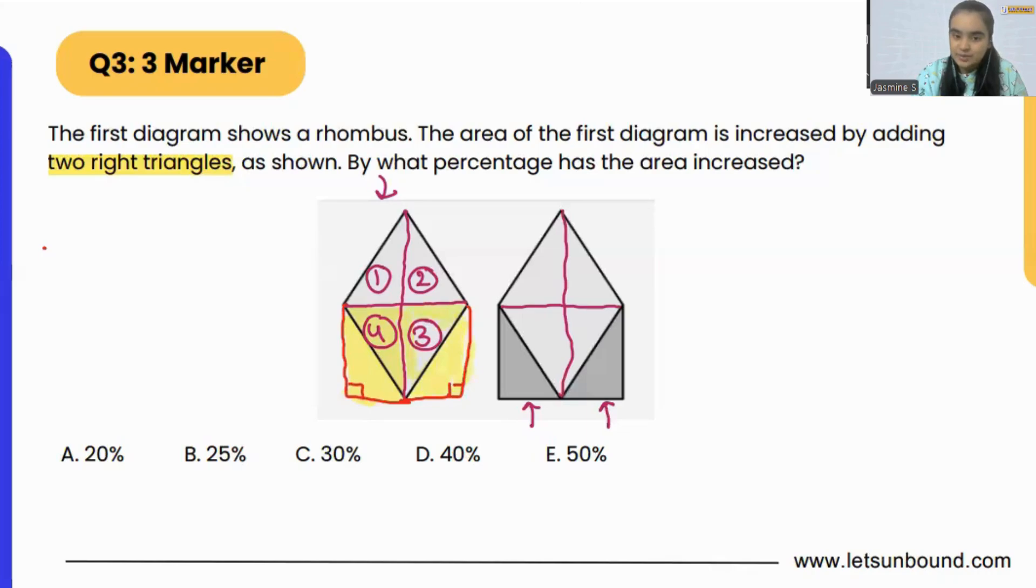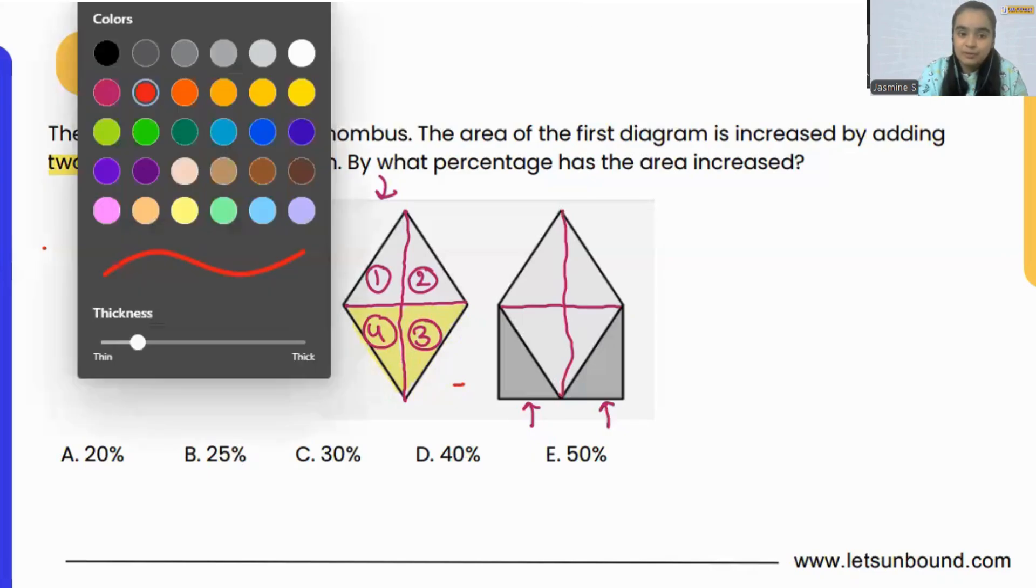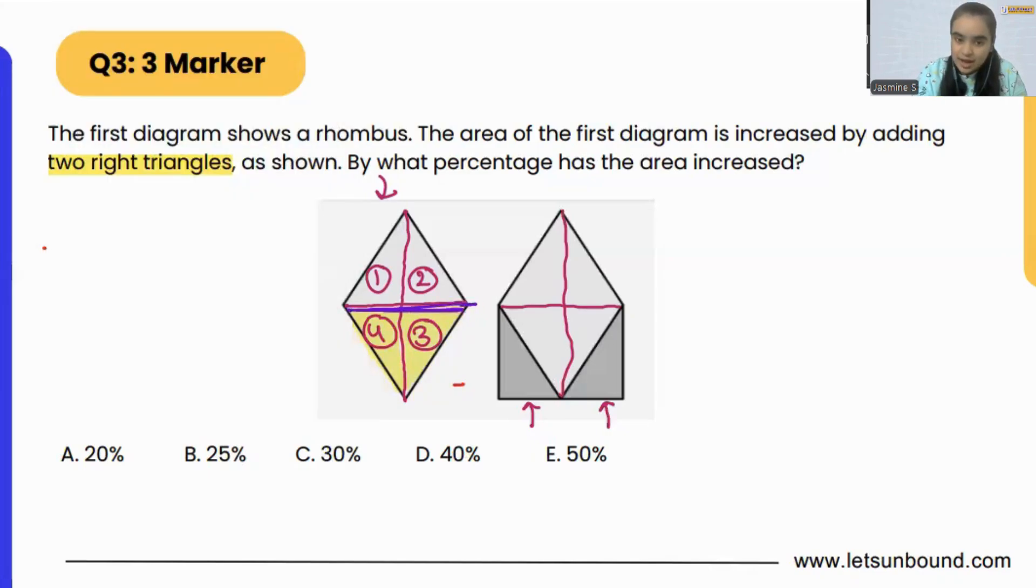Now can we say that the area of this triangle is going to be same as the inner one? And same goes on the other side, this one is identical to this one. Now basically what we are saying is the area of the other two right triangles is same as half of the rhombus.